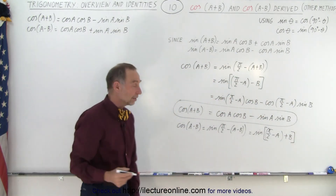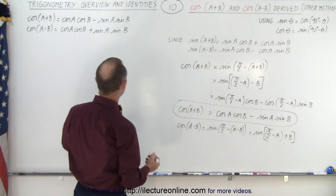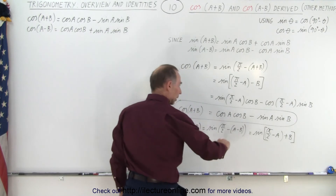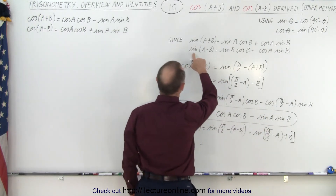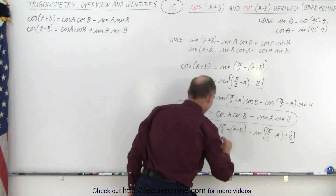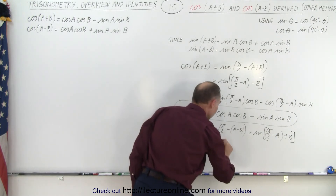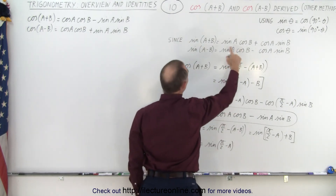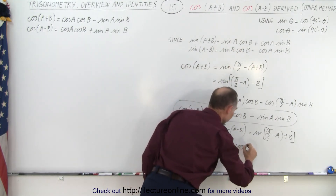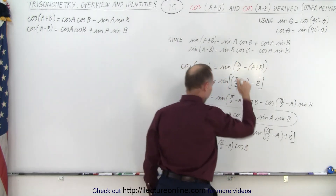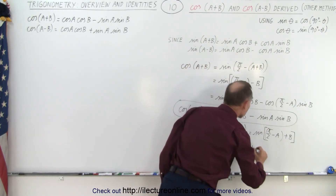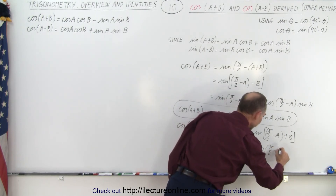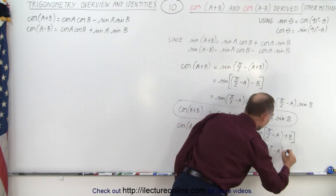Now we have the sine of the sum of two angles. Applying the sine sum formula, that is equal to the sine of the first angle — sine of (pi over 2 minus a) — times the cosine of the second angle, cosine of b, plus the cosine of (pi over 2 minus a) times the sine of b.